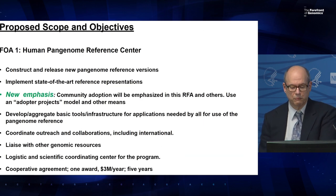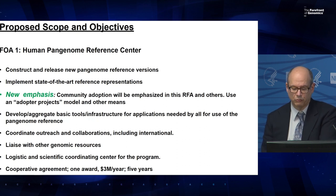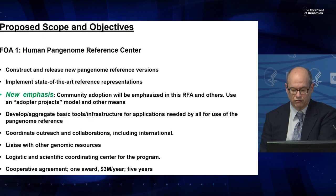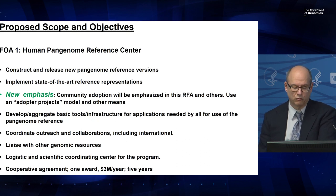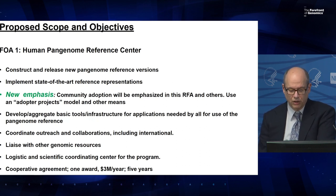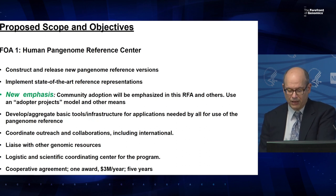For the specifics of the program renewal, we propose three FOAs. The first will be a Human Pan-Genome Reference Center — essentially a coordinating center — that will construct and release new pan-genome reference versions, implement state-of-the-art reference representations for community use, with a new emphasis on community outreach and adoption using an adopter projects model and other engagement and training. It will develop basic tools and informatics infrastructure for applications needed by all for use of the pan-genome reference, coordinate outreach and collaborations including international ones, and liaise with other genomic resources doing complementary work such as the Genome Reference Consortium, NCBI, EBI, and ANVIL. This is proposed as a U-mechanism cooperative agreement with one award at about $3 million per year for five years.